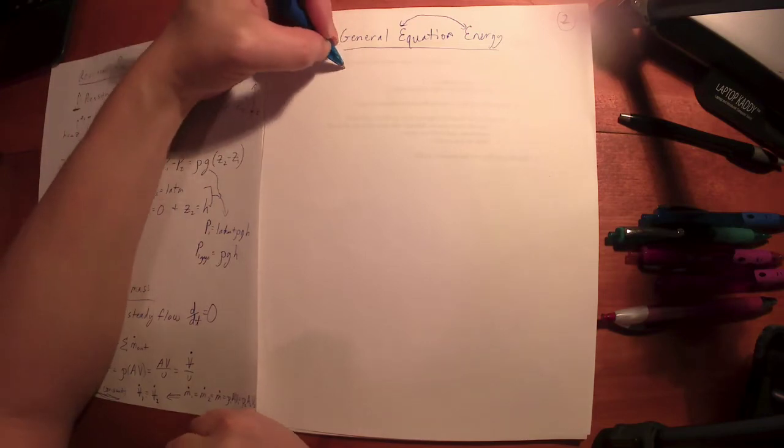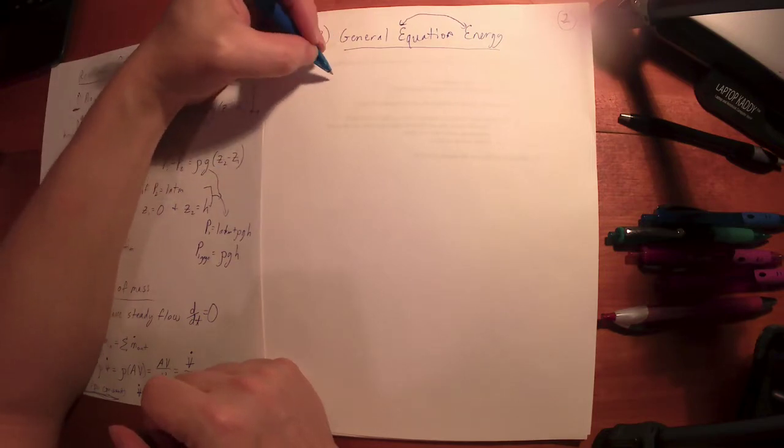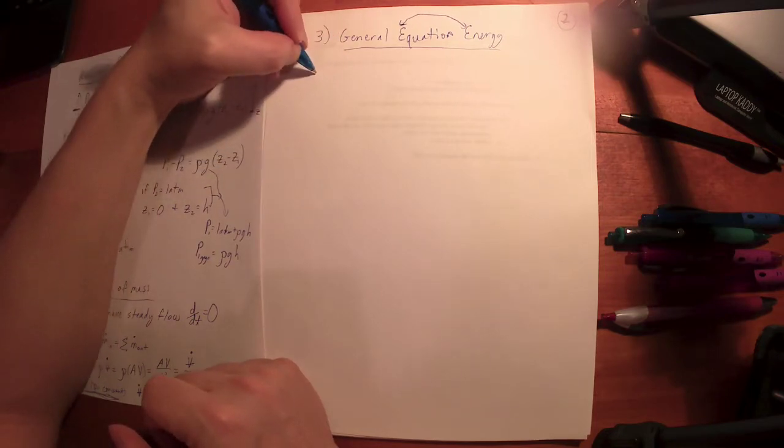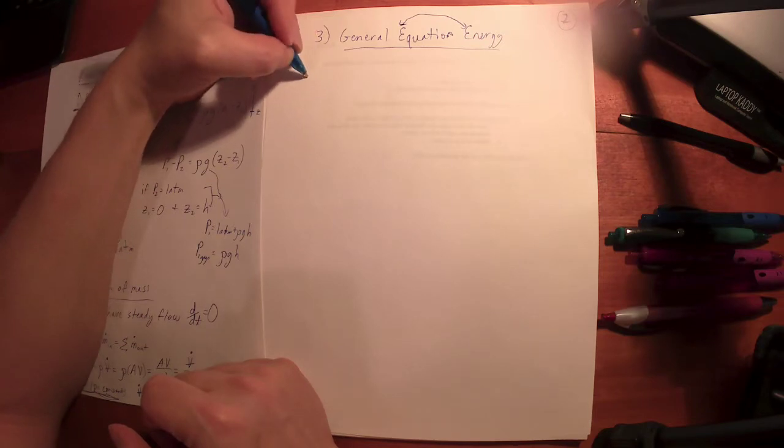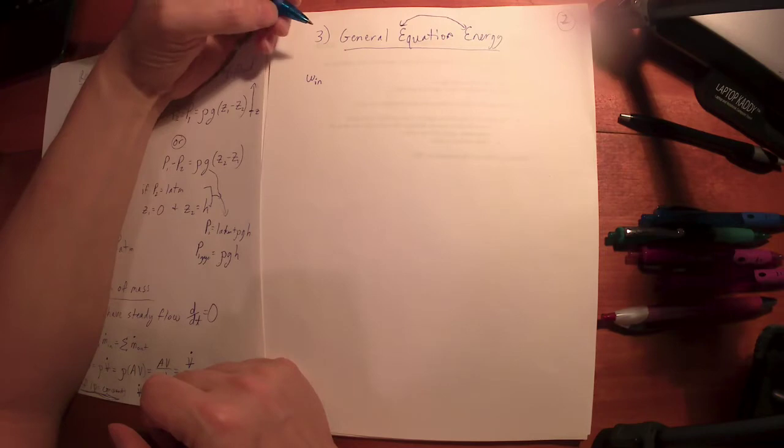So basically it comes down to this. We look at all the mechanical energy that can come into a fluid system. If we look at it energy per unit mass, we'll say let's look at all of the mechanical work that can come in.